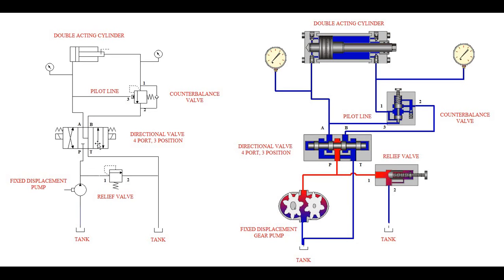The second position is the center position. In this case, P is actually blocked in the center position, but A and B go to T. Another name for that spool configuration is the float position.